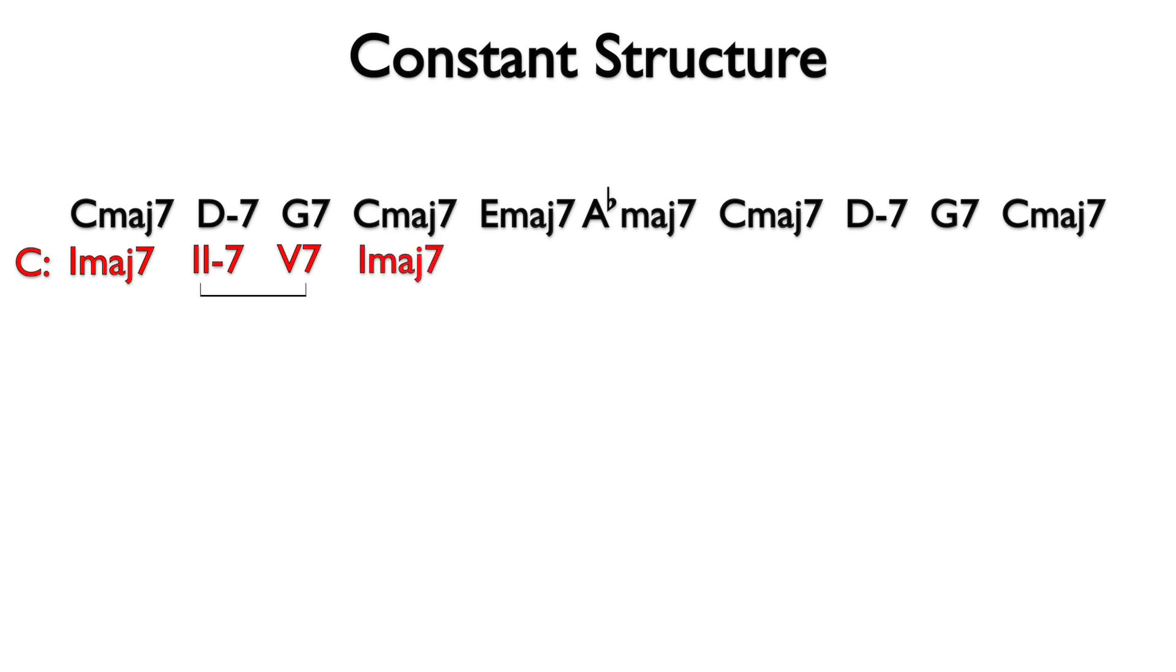A bracket is added to the 2 5 and an arrow from 5 7 to 1 major 7. This progression ends the same way that it begins and is analyzed accordingly. The constant structure portion of the progression is non-functional, so we will describe what is happening. Let's write constant structure with an arrow for up in major 3rds. I will draw a line indicating the duration of the constant structure progression. Notice that the first and last chords of the constant structure progression can be analyzed with Roman numerals.